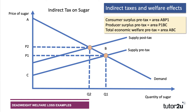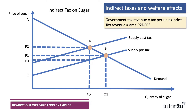Before the tax, the total area of welfare was A B C, made up of consumer and producer surplus. Now let's think about what happens to welfare as a result of the tax. I've drawn across to P3, because the price that consumers pay is now P2, but the government gets the tax per unit — D E — multiplied by quantity Q2. The producer only keeps price P3: consumers pay P2, the tax is taken off, and the producer keeps P3. So government tax revenue is tax per unit multiplied by quantity, which is the area P2 D E P3.